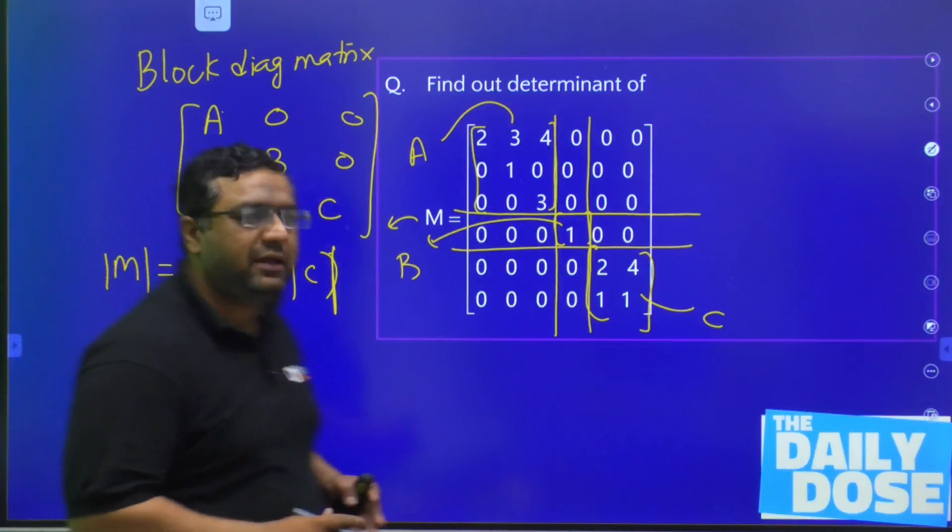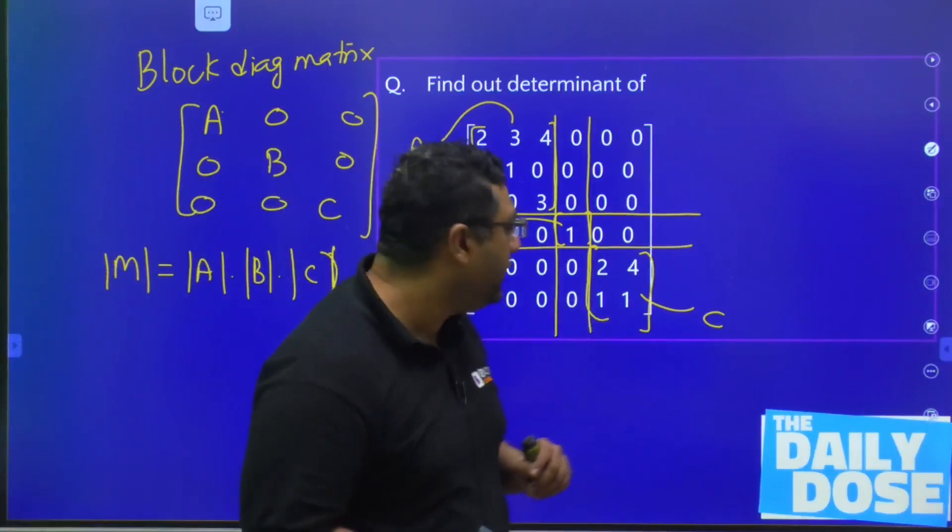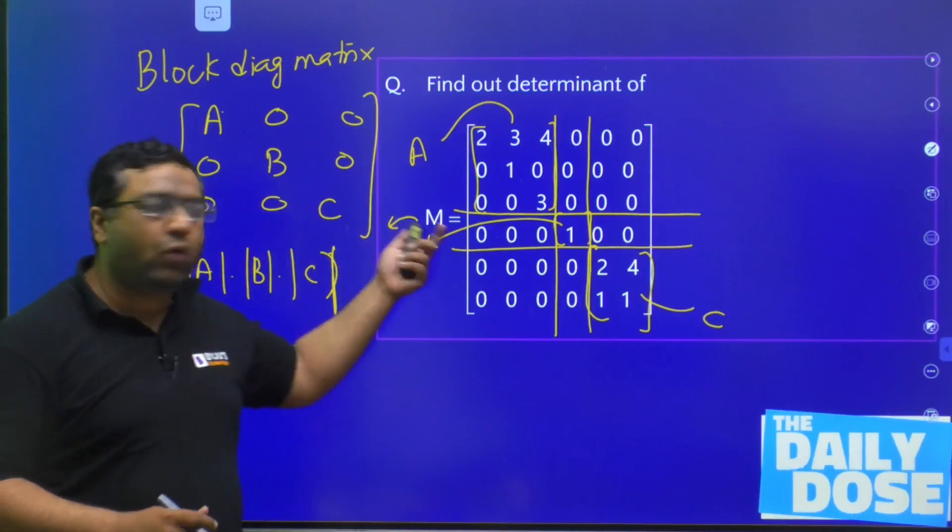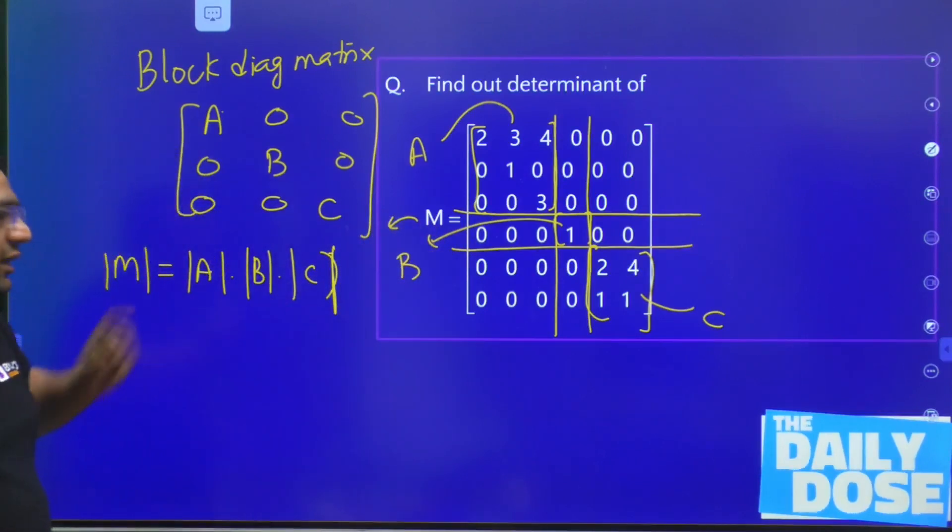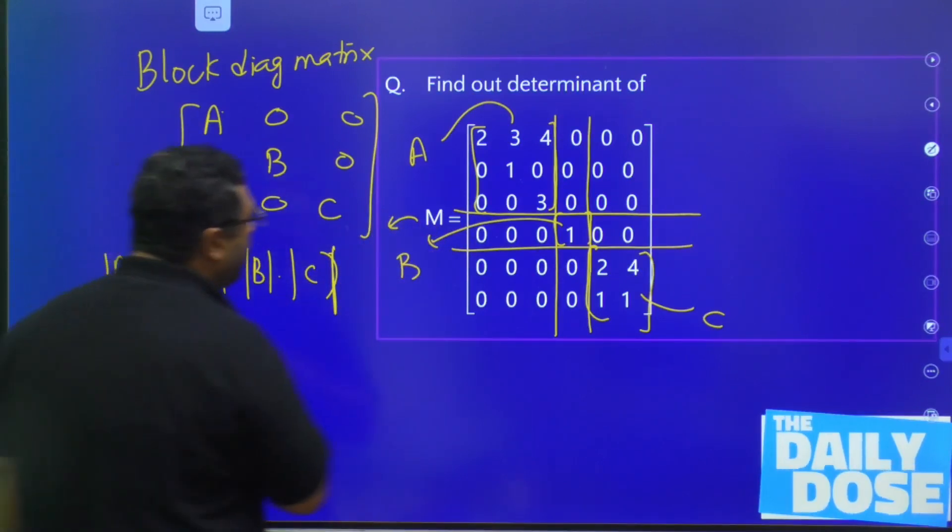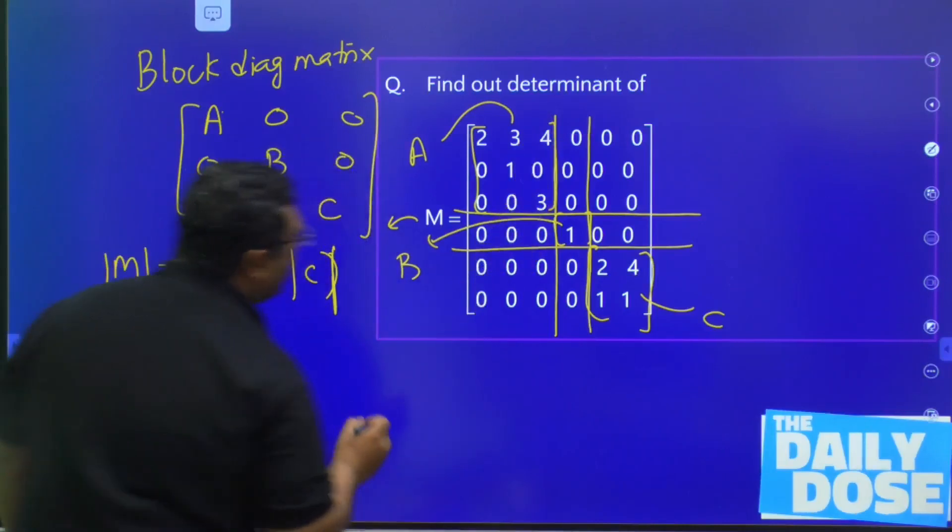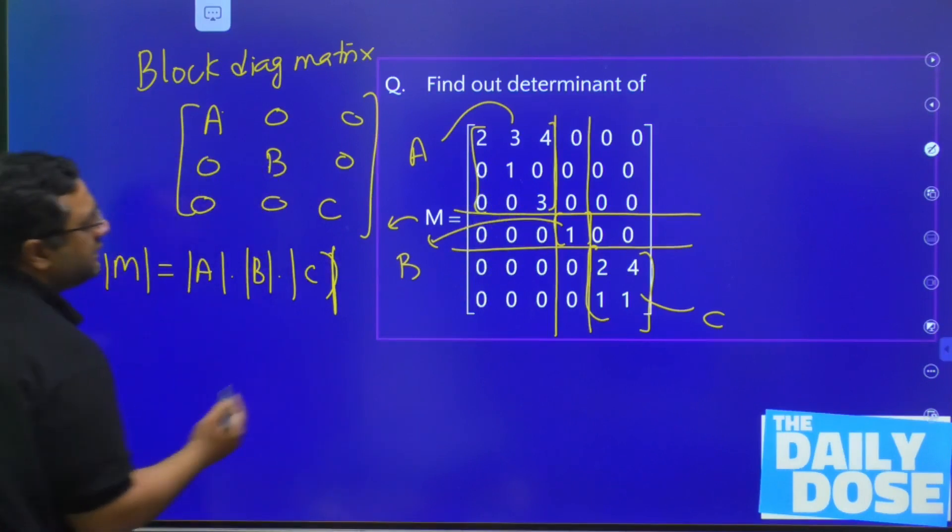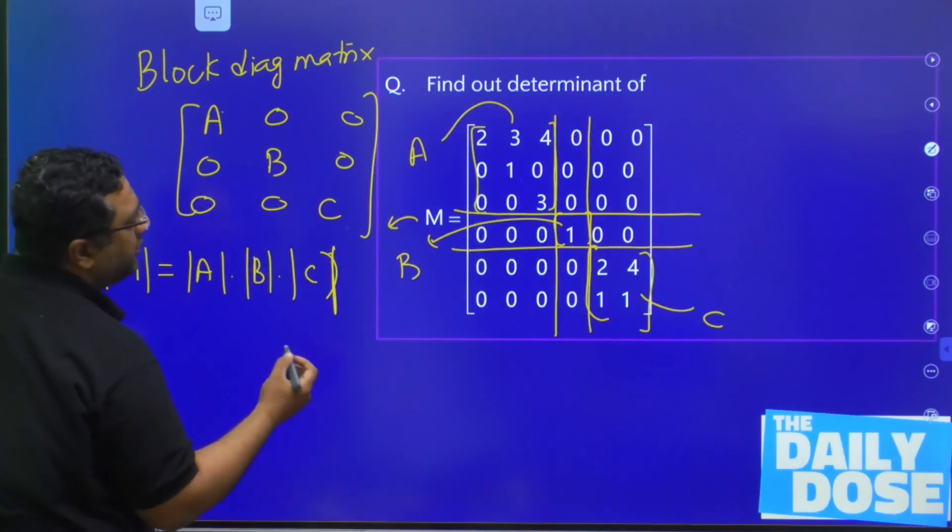So if you have any matrix which can be written in this format, then to find out the determinant of this whole matrix, you can do this trick. So if you see the determinant of this matrix, you can write it as 3 minus 0. So 3 into 2 is going to be 6.